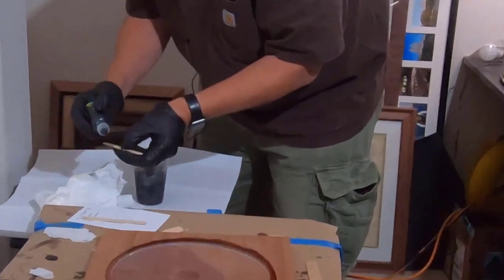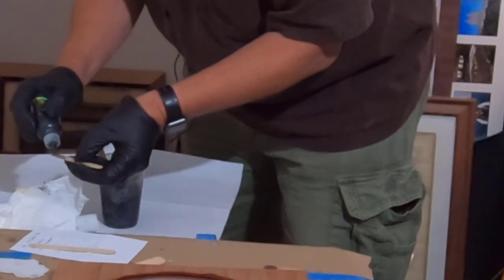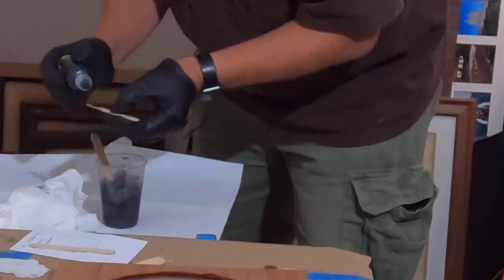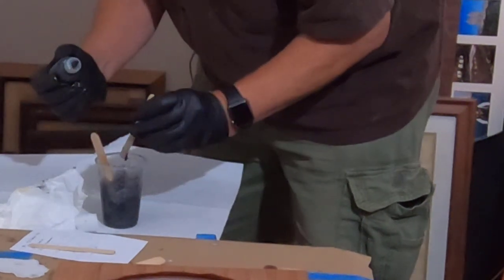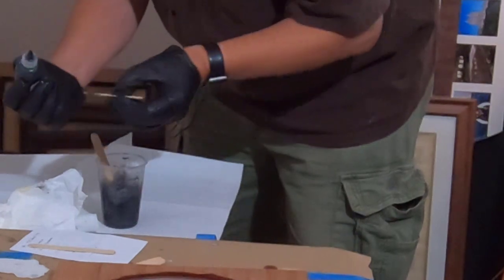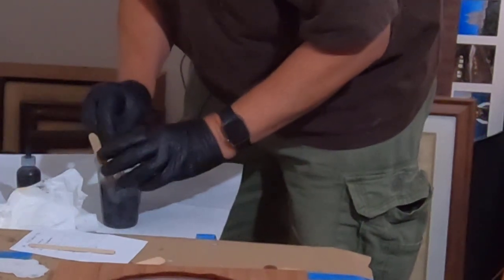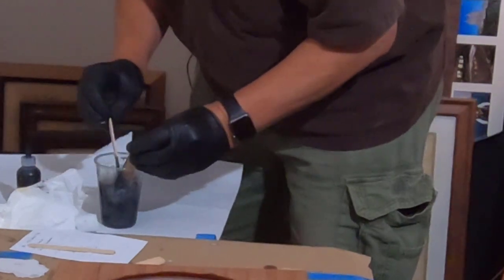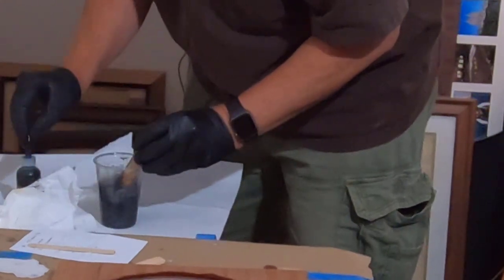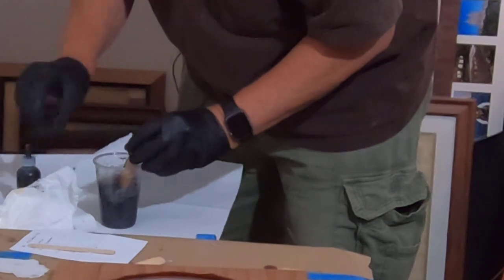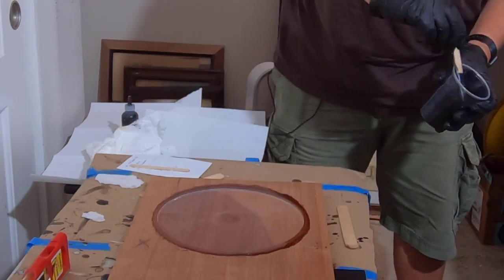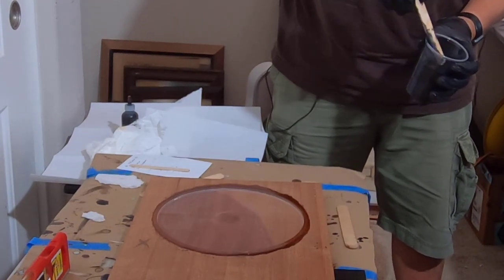I always like to start by just putting a drop on this stir stick and putting it in that way. That helps me control a little better how much is going in. I've had a problem in the past with accidentally squeezing the bottle too tight and getting too much of that liquid pigment in there. I think that'll work fairly nice. So now we'll mix it all up. Okay, I think it looks pretty good there. Now we're going to go ahead and pour.